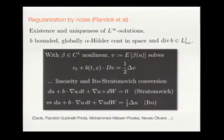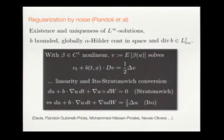Take a nonlinear function beta and re-normalize the Stratonovich formulation. Since the chain rule holds, you get the same equation for beta(u). Converting to Itô form and taking expected values gives a parabolic equation for the expected value of a nonlinear function of u. This means you can get better results under weaker assumptions on the velocity field than in the deterministic transport case — this is one way of seeing the regularization effect.